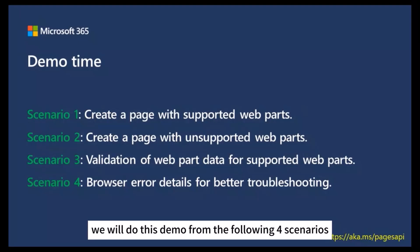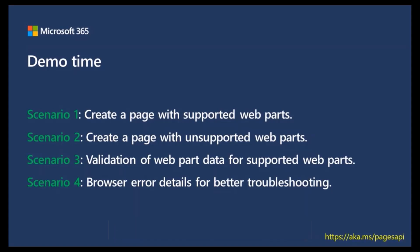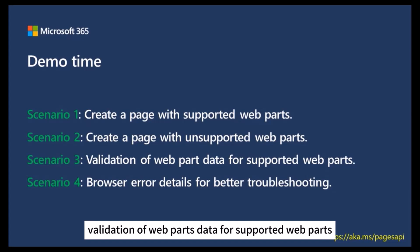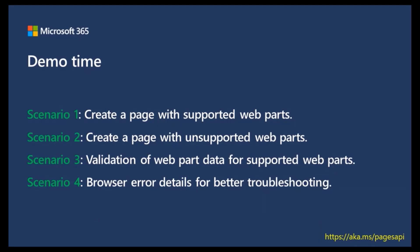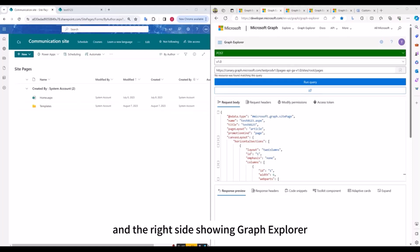We will demo four scenarios: create a page with supported web parts; create a page with unsupported web parts; validation of web part data for supported web parts; and richer error details for better troubleshooting. My test environment has the internal test environment on the left side, and on the right side, shown in Graph Explorer, we will use a canary endpoint to finish the demo.